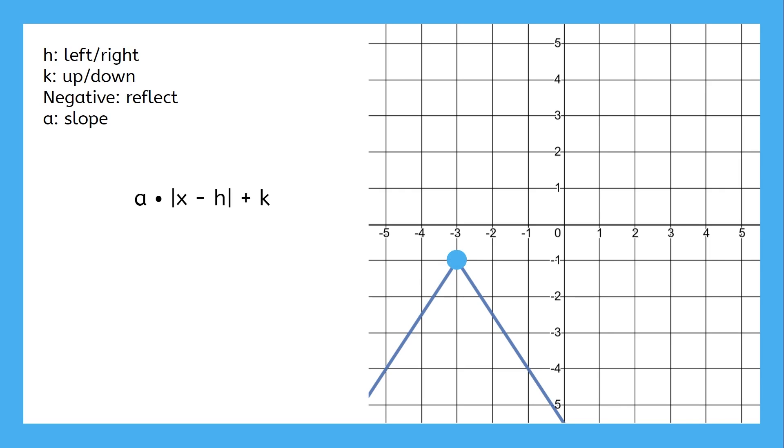The vertex is here at negative 3 comma negative 1, so it's been shifted 3 to the left and 1 down. The absolute value graph is upside down, so the multiplier will be negative. And the slope is 3 over 2. So the function for this graph is negative 3 halves times the absolute value of x plus 3 minus 1.